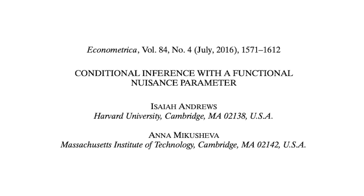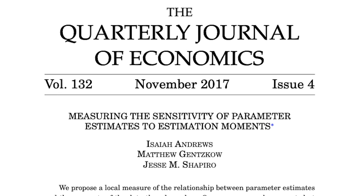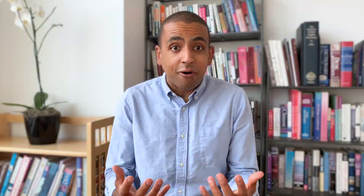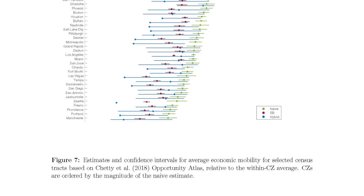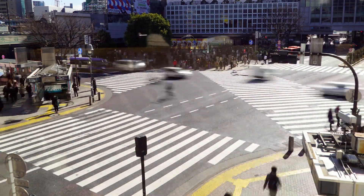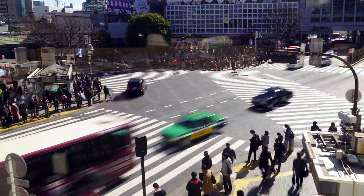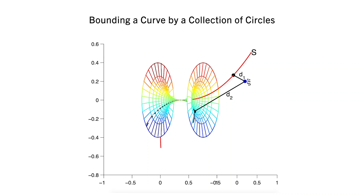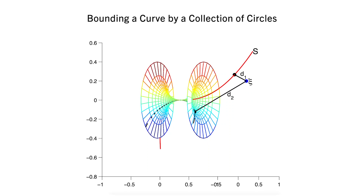Econometrics is the subfield of economics that develops new statistical tools. A lot of the big questions in economics are empirical — they're ultimately questions about the world, and so the best way we can answer them is by going to the data. But economists, in the course of doing empirical research, sometimes run into questions where the available tools either are unreliable for various reasons, or where there just isn't even a tool that we know of to answer the question.